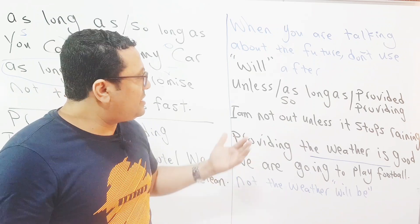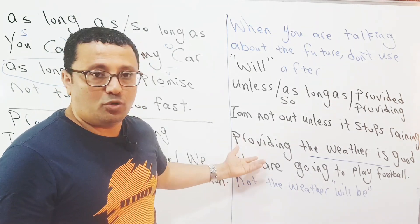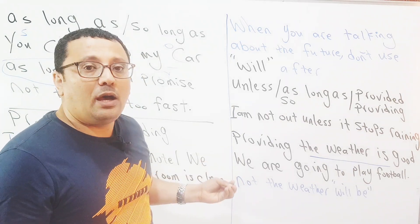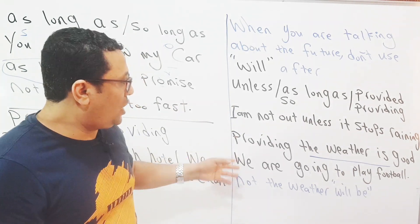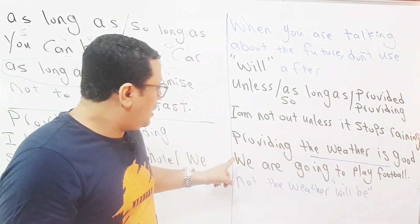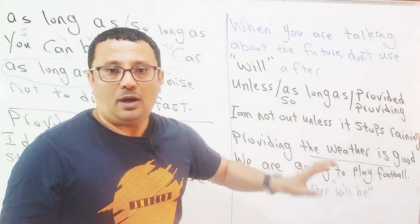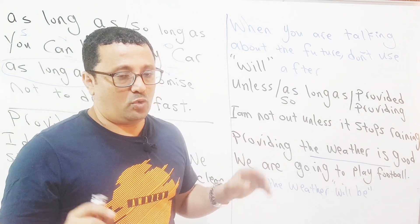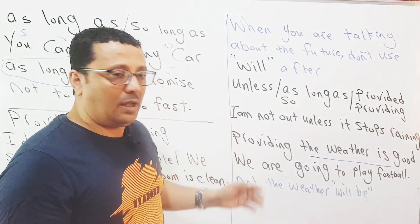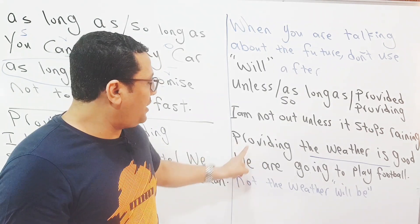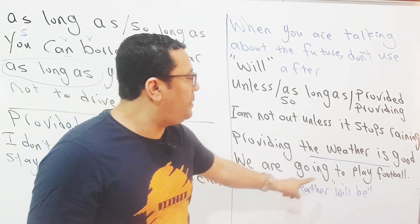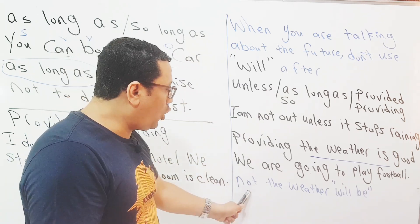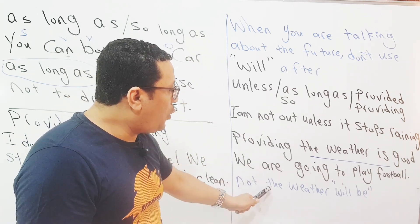البعض لا يعرف أنه ممكن تستخدم 'providing' في أول الجملة - هذه 'providing' تستخدمها في أول جملة، وترجمتها بشرط. بشرط إن الـ weather is good, we are going to play football. الطبيعي إن البعض يقول خطأ: 'providing the weather will be good' - لا تقول 'providing the weather will be'.